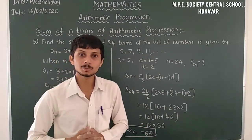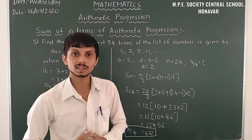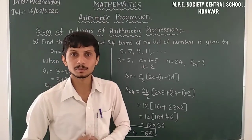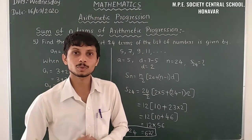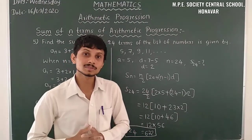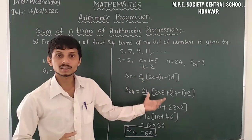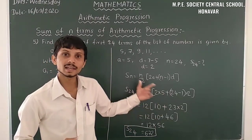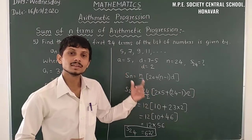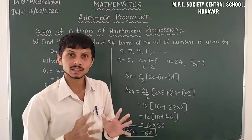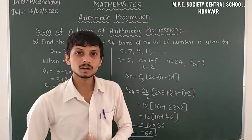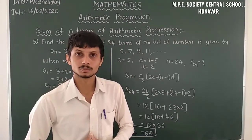This is the last problem, so I will conclude this chapter here. Those watching for the first time, please subscribe to our channel and don't forget to press the bell icon. There are many more problems in the exercise — solve them using the formula for finding the sum of n terms of arithmetic progression. Thank you all, be safe and stay home.